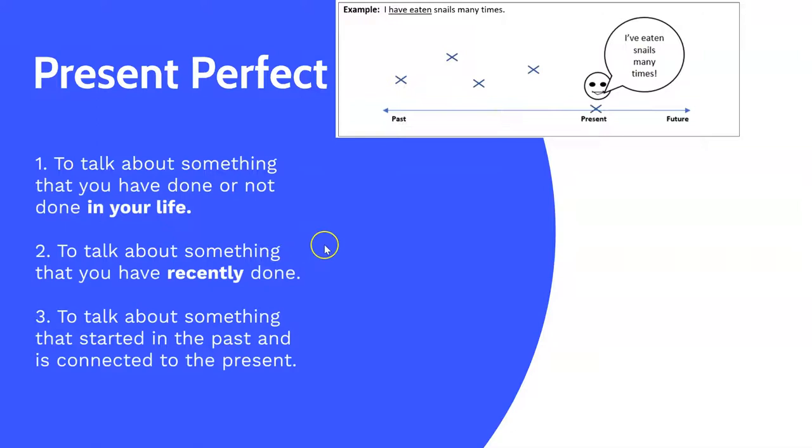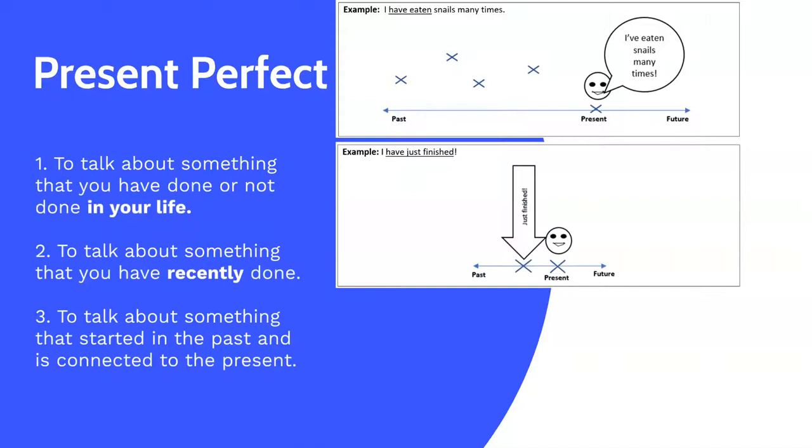The second use of the present perfect tense is to talk about something that you've recently done. For example, I have just finished. And of course the word just gives you extra information that it was in the very, very, very recent past.